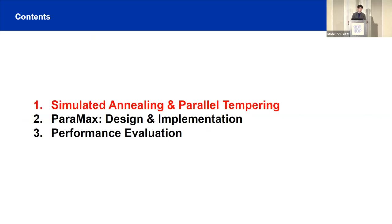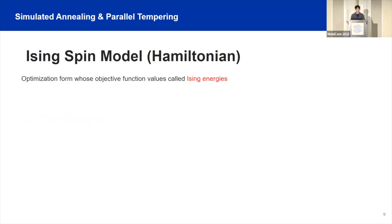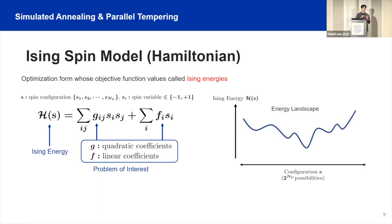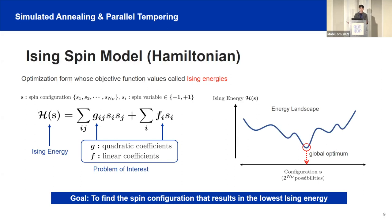Let's look at the algorithmic fundamentals in Paramax: simulated annealing and parallel tempering. First, we need to understand the Ising spin model. The Ising spin model is an optimization form whose objective function consists of linear and quadratic terms. The spin variable is binary — either plus one or minus one. The quadratic and linear coefficients are decided by the problem of interest; in our case, this is ML optimal detection. We call the values of the objective function the Ising energy. If you plot all possible solutions with their corresponding Ising energies, you get the energy landscape. The goal is to find the spin configuration that corresponds to the lowest Ising energy — it is simply a minimization problem.